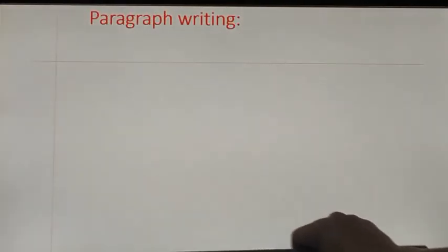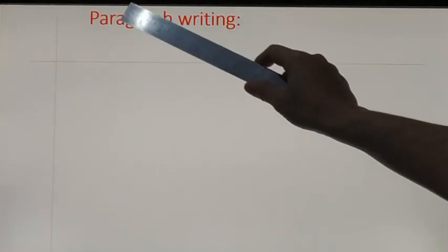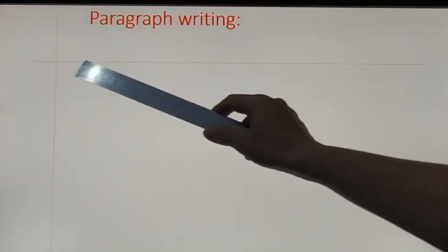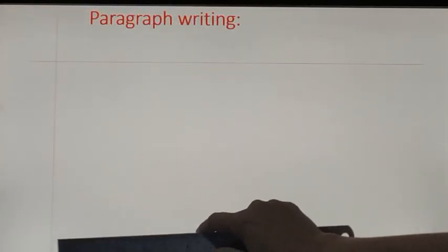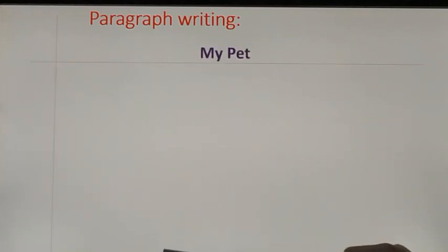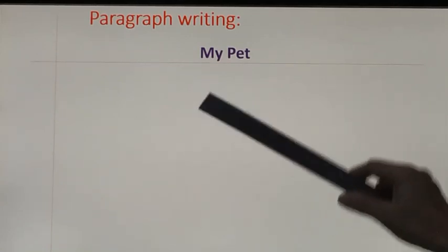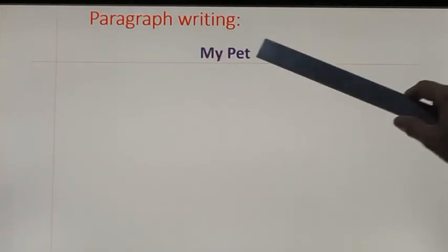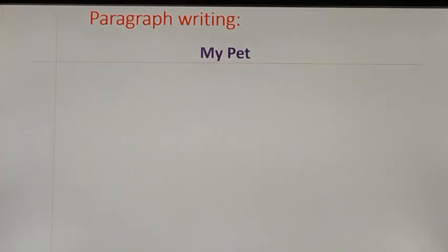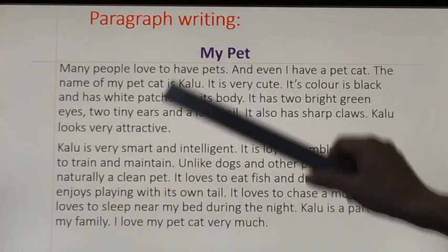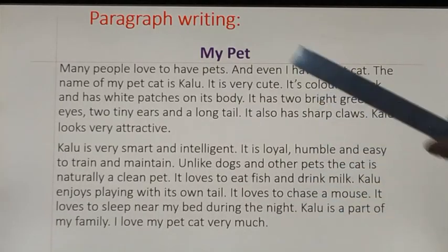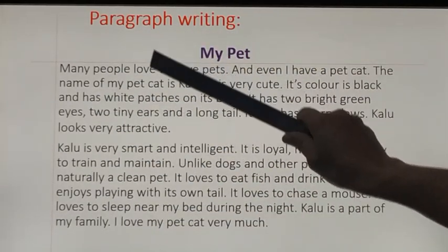Now take a new page in your grammar notebook, right there at the top of the margin. You can see the red line in your book. At the top, write 'Paragraph Writing.' Then write 'My Pet.' We are going to write a paragraph about my pet, so write 'My Pet' in the center. Now all the sentences we have discussed together are put together here in the group.